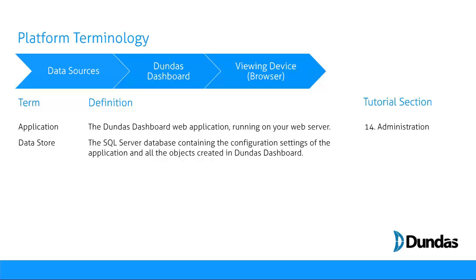In addition to the web application, there are two small databases on SQL Server required to operate the platform. The first is the data store. This database contains all of the configuration settings of your application, as well as all of the objects you create in Dundas Dashboard. This includes your data connections, your virtual tables and cubes, which you'll learn about later, and your KPIs and dashboards.